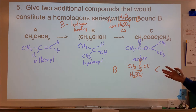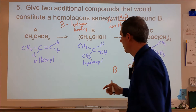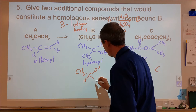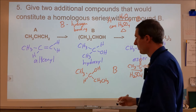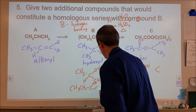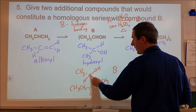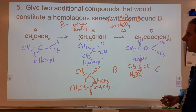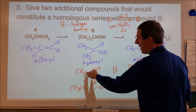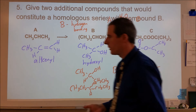Part five: we want two additional compounds that would make a homologous series with compound B. A homologous series means the same type of compound but with different chain lengths. We could take CH3 to a carbon with a hydroxyl group, but instead of one carbon attached, have two carbons attached. Or we could have a CH3CH2 group on both sides, or one on one side and a three-carbon chain on the other side. As long as we're just increasing by CH2 units, everything is fine.